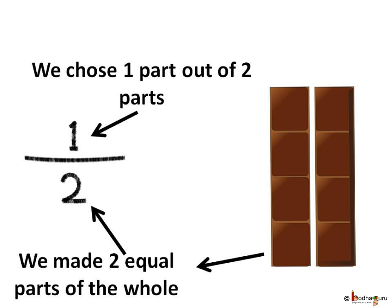Now, in half or one by two, what does two stand for? It is the number of equal parts into which the whole has been divided. Like, we divided the chocolate into two equal parts, or we divided the bunch of cherries into two equal parts. And what does one stand for? It is the number of equal parts which has been taken out.